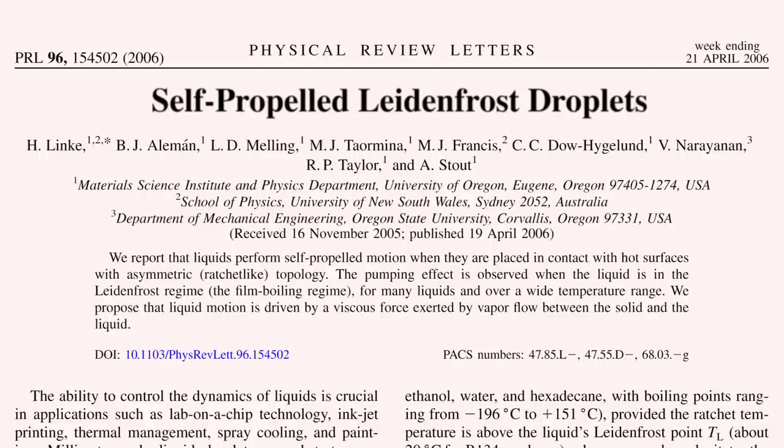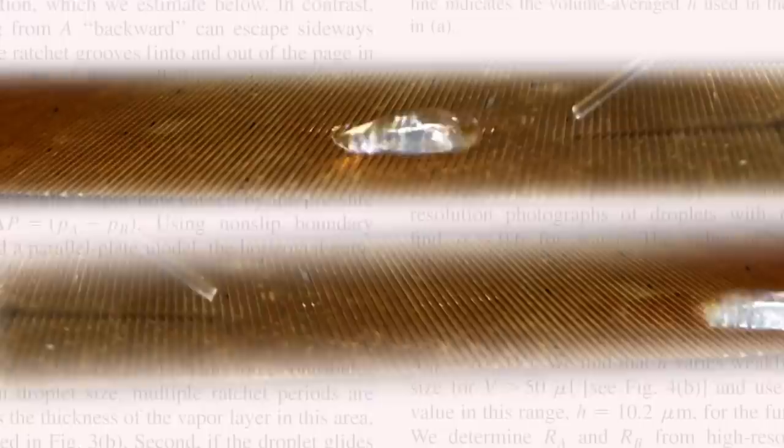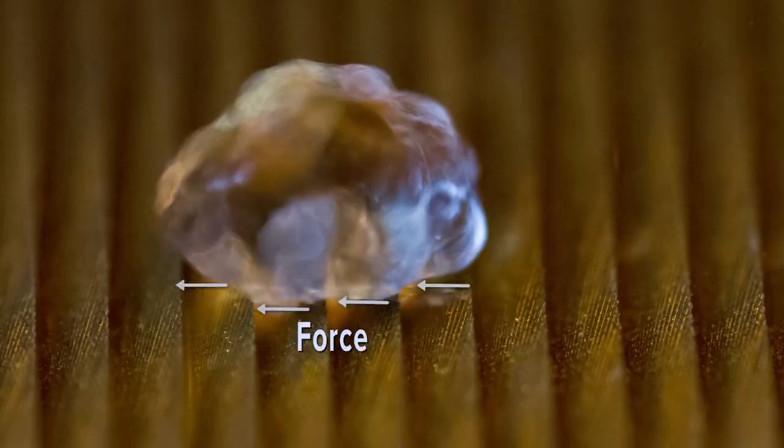Entitled Self-Propelled Leidenfrost Droplets, the paper reported a way to move beads of water across a heated surface covered with stair-like ridges. As the droplet encountered a ridge, the flow of vapor beneath it pulled it up and over, even when the surface was on a slight incline.